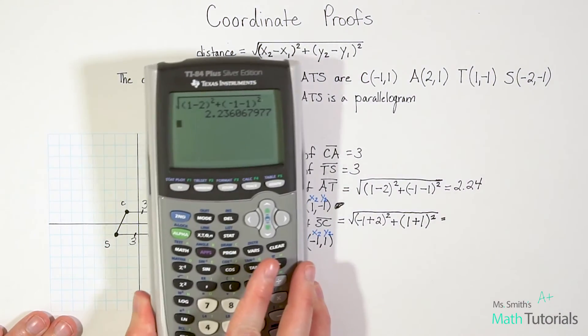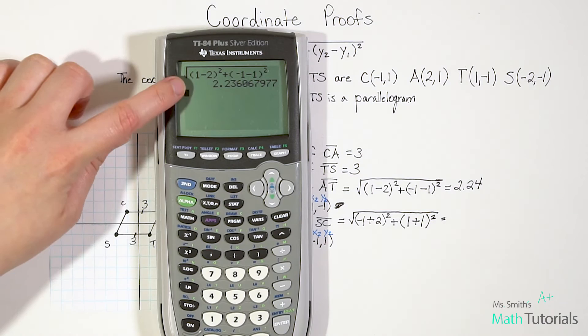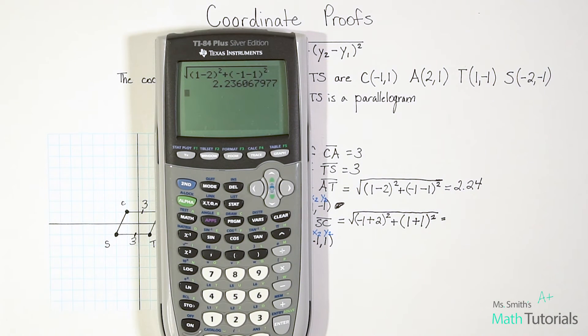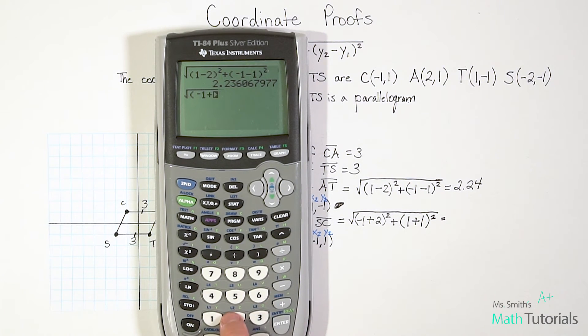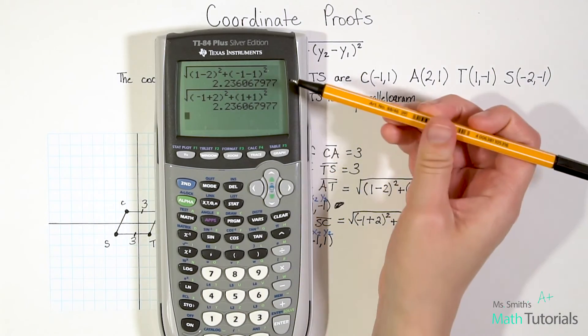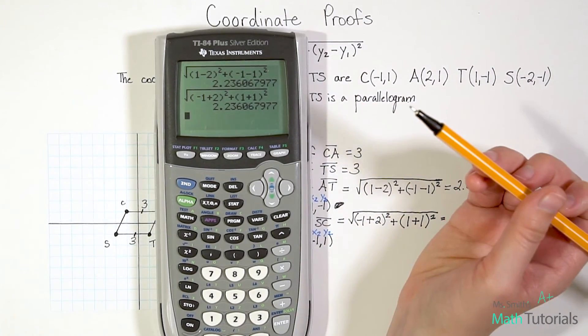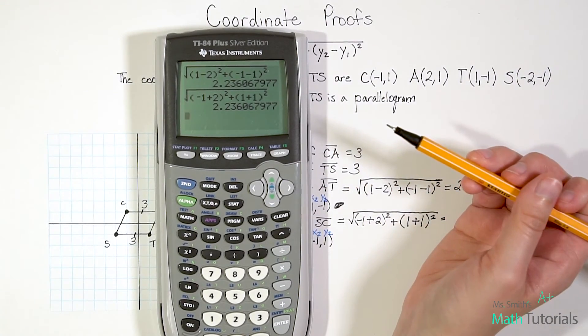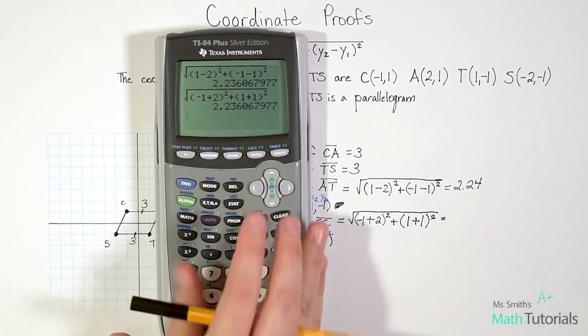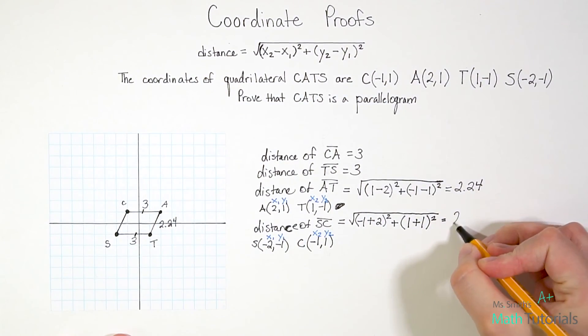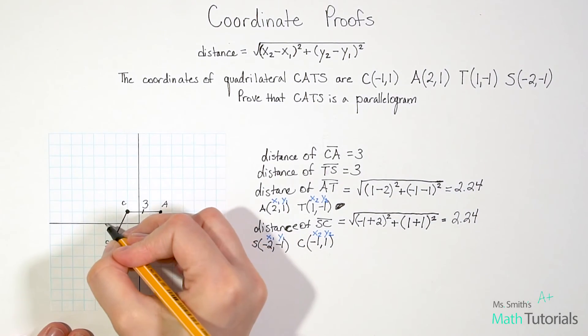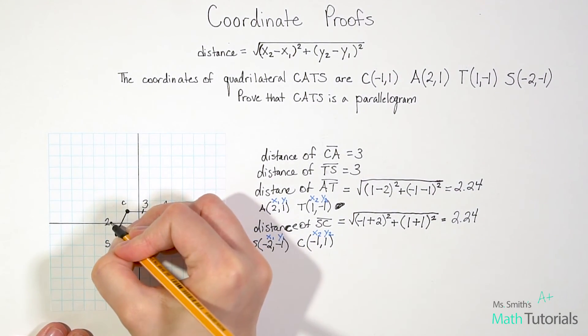Let's bring out the calculator again to save some time. Notice I've left this here because even though I did round that, I want to make sure I truly get the same distance, because if this is a parallelogram it should be exactly the same. So I'm going to do square root of negative 1 plus 2 squared plus 1 plus 1 squared and hit enter. Okay, look, notice I got the exact same. So again, I'm just going to round to the nearest hundredth. We're going to say 2.24. So we now know that side SC is really 2.24.